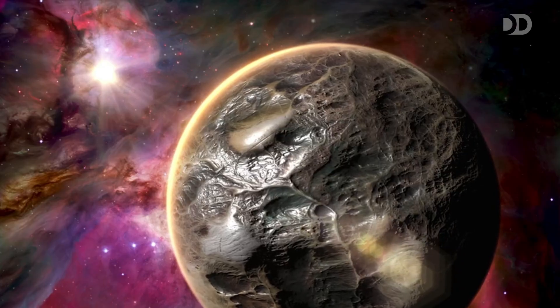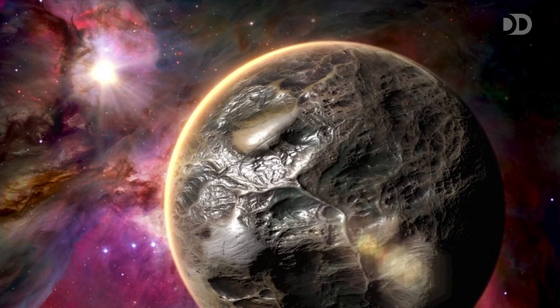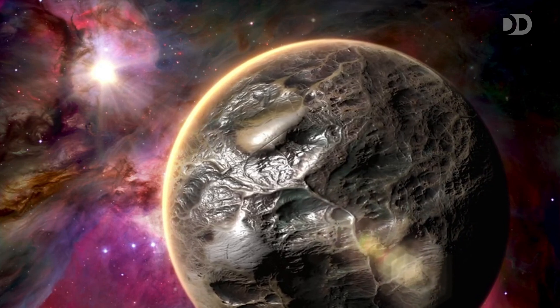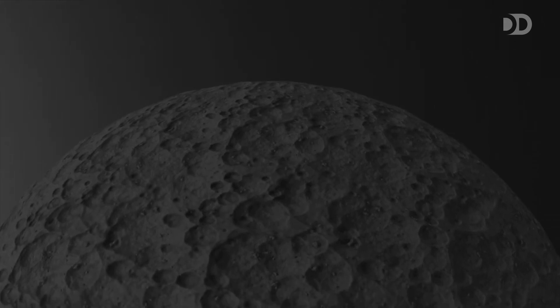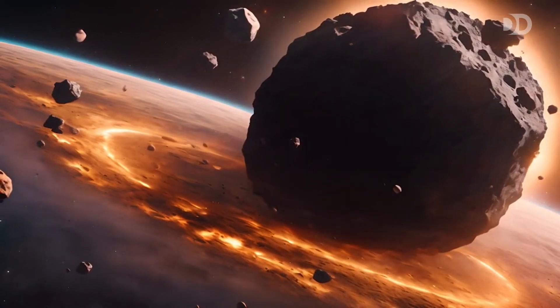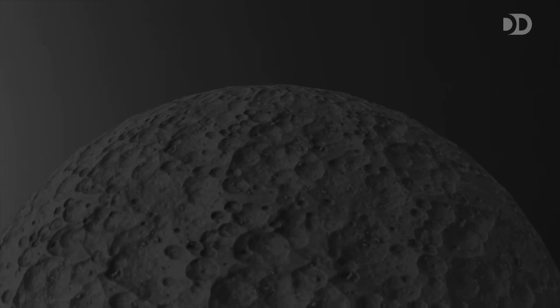Its surface is a battered record of the solar system's violent history, covered in craters from countless impacts over billions of years. With no thick atmosphere to protect it, every passing asteroid leaves its mark, creating a landscape that looks frozen in time.